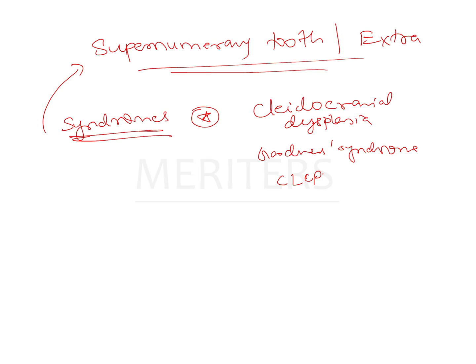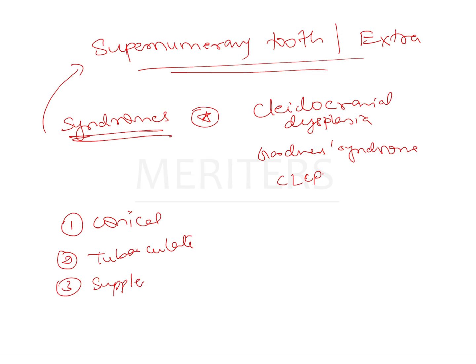There are four different types of supernumerary teeth. The first type is conical, the second is tuberculate, the third is supplemental, and the fourth is odontome.